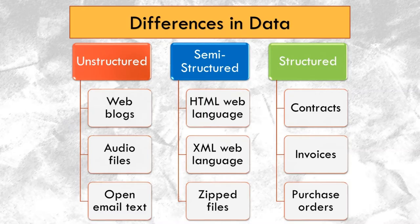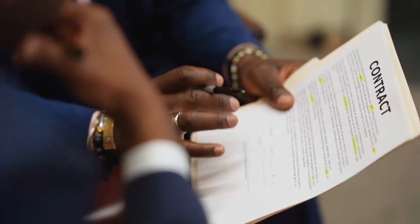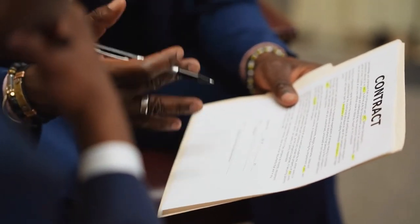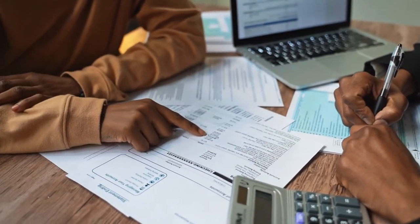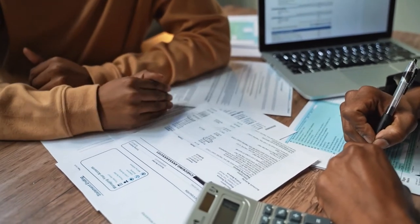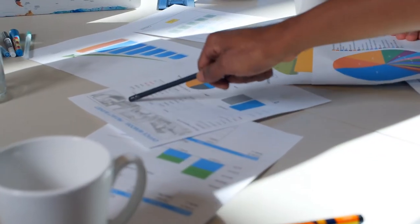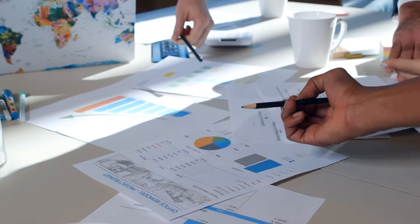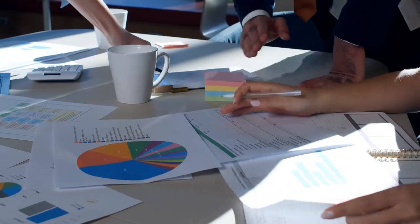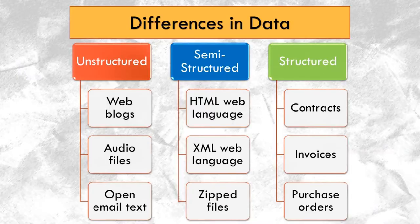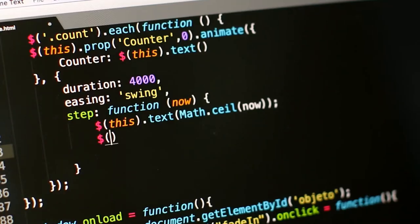Structured data sources include sales invoices, credit memos, contracts, sales orders, data in Excel, financial statements, credit card transactions, and inventory records. Unlike unstructured data, structured data is in a standardized, organized format that can be easily summarized or transformed into useful information. Semi-structured data is partially structured and partially unstructured. Think of web pages in HTML and XML web languages.